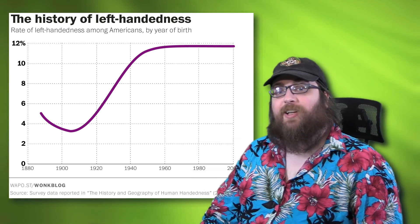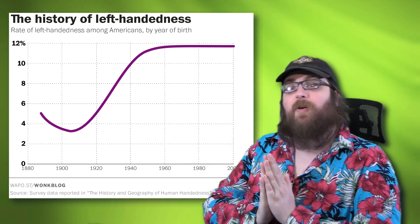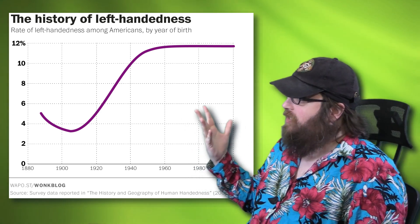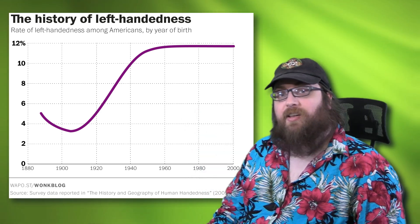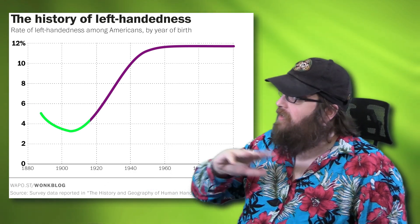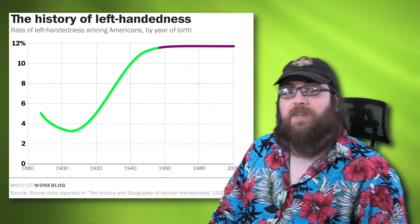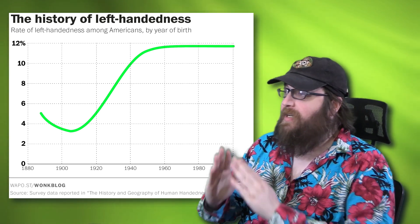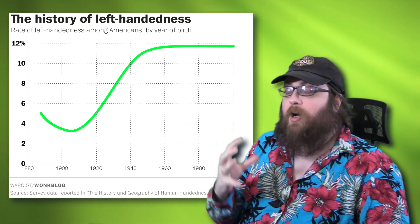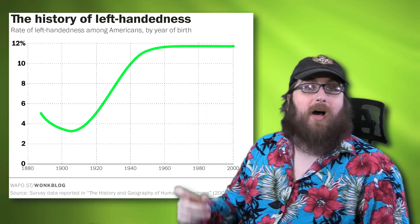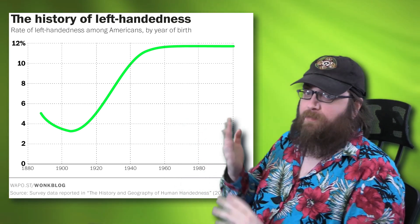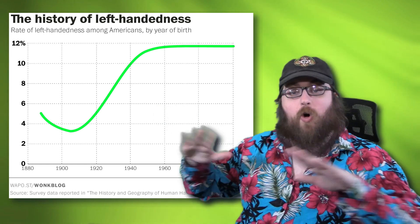If you're not familiar with this particular chart, it shows the percentage of Americans who are left-handed over time. As you can see, it starts around 5% in the late 1800s, dips down to just about 3%, before steadily rising over the next 50 years. Between 1910 and 1960, the percentage of lefties in America quadrupled to about 12% of the total population, at which point the number suddenly just levels off and we see no more growth.